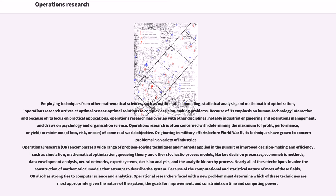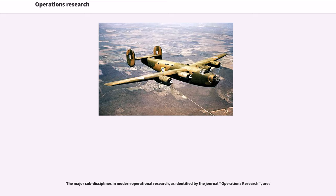Because of the computational and statistical nature of most of these fields, OR has strong ties to computer science and analytics. Operational researchers faced with a new problem must determine which techniques are most appropriate given the nature of the system, the goals for improvement, and constraints on time and computing power. The major sub-disciplines in modern operational research, as identified by the journal Operations Research, are